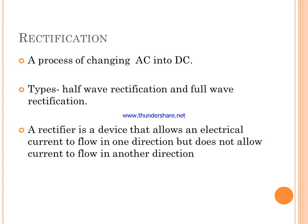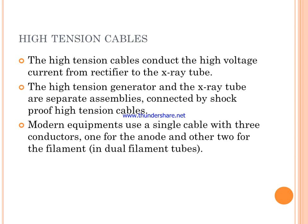Types of rectification are half-wave rectification and full-wave rectification. A rectifier is a device which allows electrical current to flow in one direction only. The high tension cable conducts high voltage current from the rectifier to the X-ray tube. X-ray tubes are separate assemblies connected by shock-proof high tension cable.